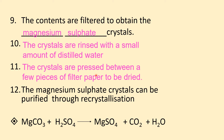Why should the crystals be pressed between filter paper rather than dried using a hair dryer or oven? We cannot use direct heating because the salt will decompose — 'decompose' means to break apart into its elements. If heated directly, magnesium sulfate would break down into magnesium, sulfur dioxide, and oxygen. That is why we only dry the crystals by pressing between a few pieces of filter paper.